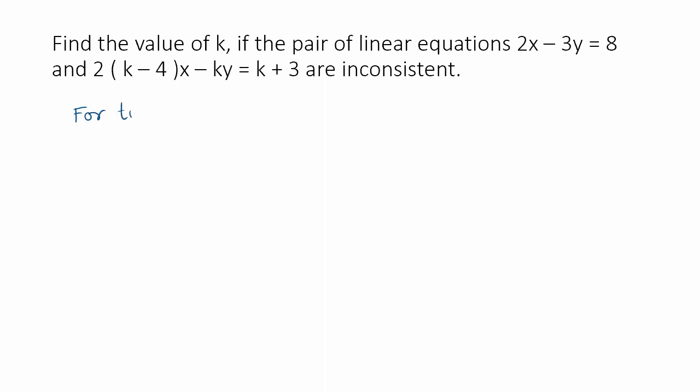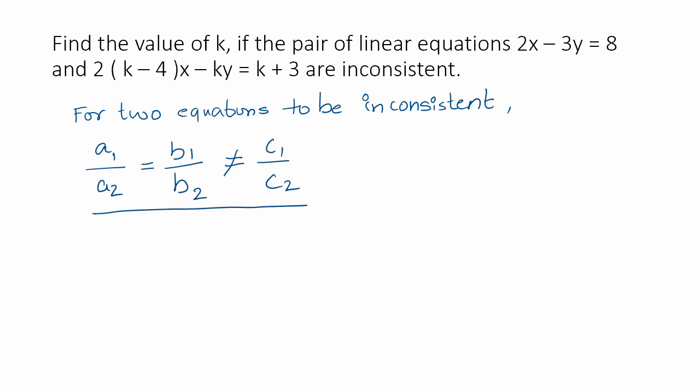for two equations to be inconsistent, a1 by a2 should be equal to b1 by b2. That should not be equal to c1 by c2. This relationship has to hold good.